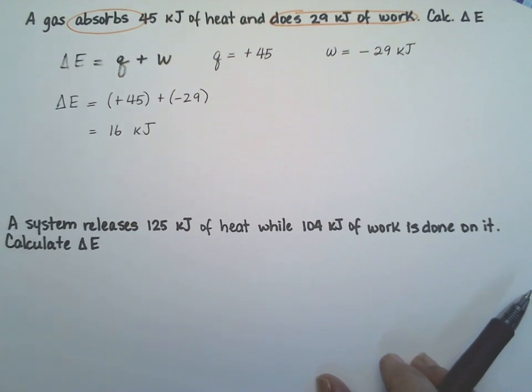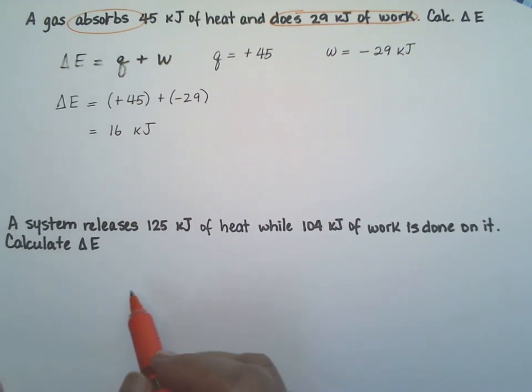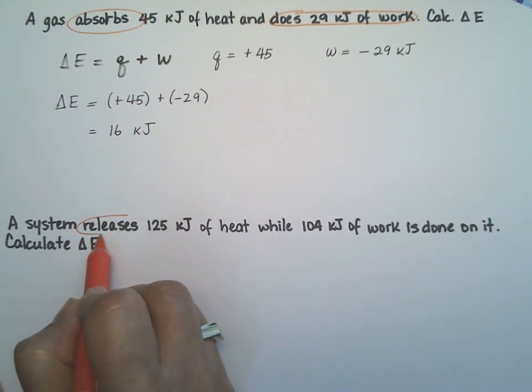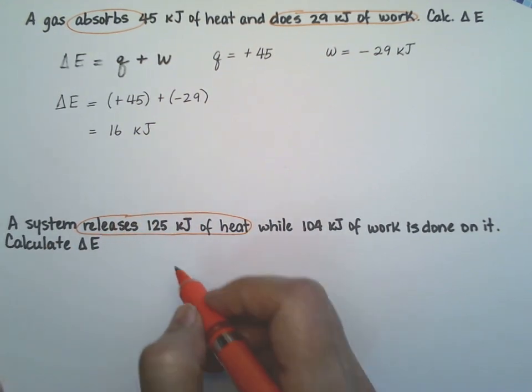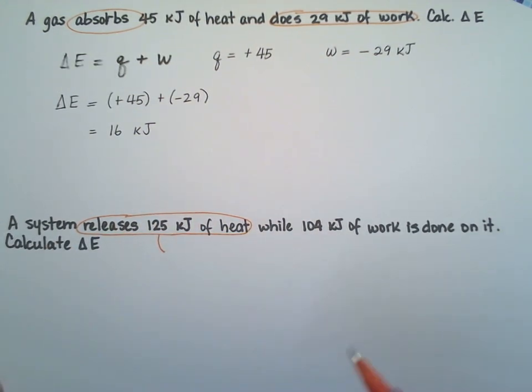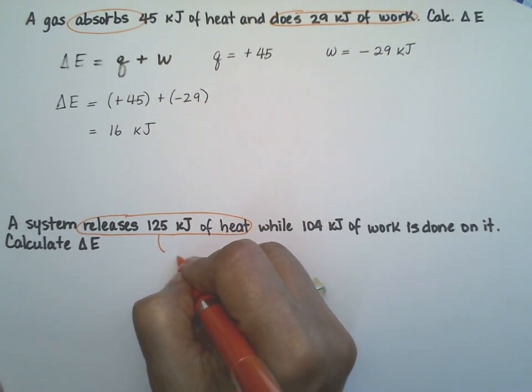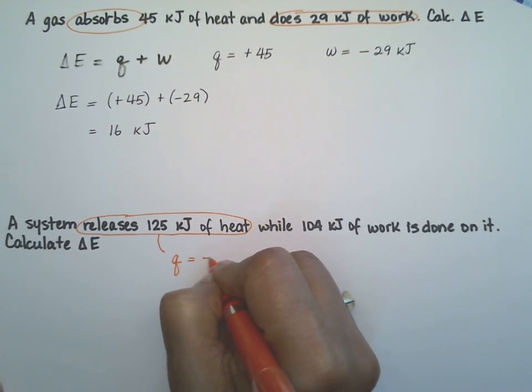Let's do the same for the second one. It's the same formula. But let's see what the problem actually says. The system releases 125 kilojoules of heat. That's important because that's telling you that the system is letting off the heat. So that is a negative number.